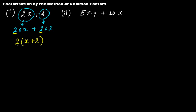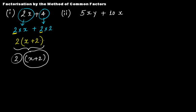This uses the distributive property of multiplication over addition, because 2 times x is 2x and 2 times 2 is 4. So the required factorization of this algebraic expression is 2(x + 2). The two factors are 2 and (x + 2), and this is the irreducible factor form because it cannot be further reduced.